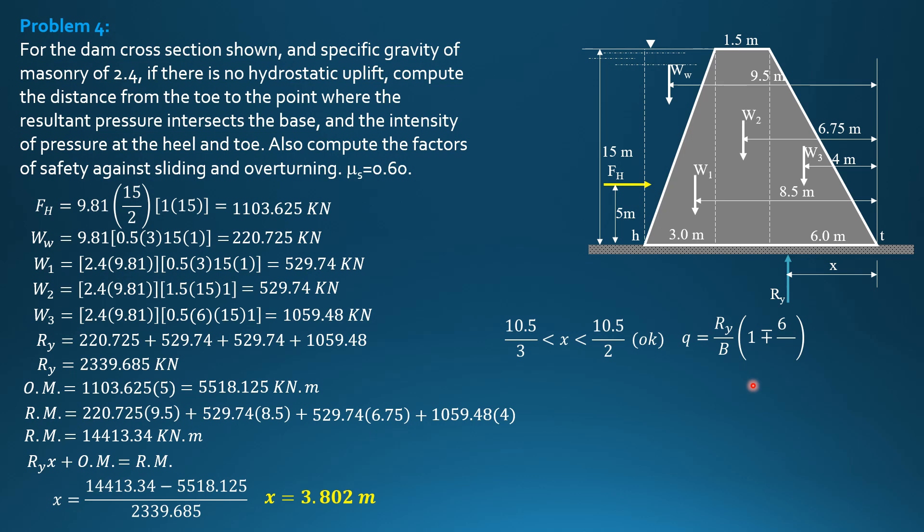So Q is RY over B quantity 1 plus or minus 6E over B. We can use this formula here. We cannot use this formula if X is outside that range. So substitute E is 10.5 over 2 minus X. So distance between the center and RY, that's E. So 1.448 into the formula.